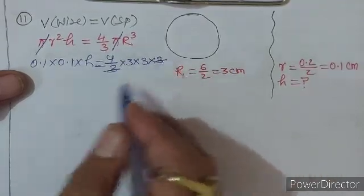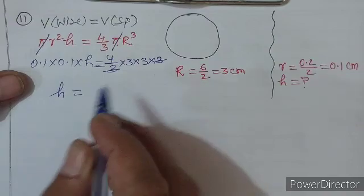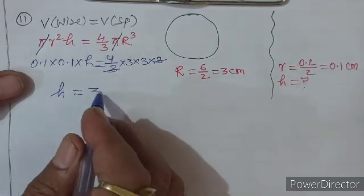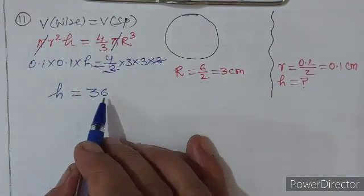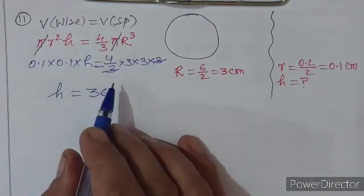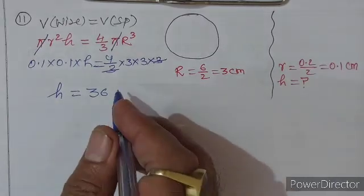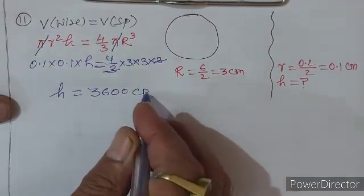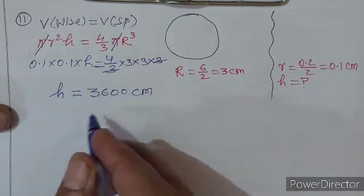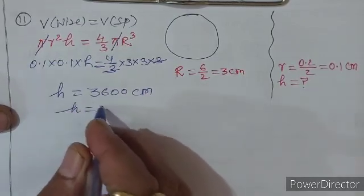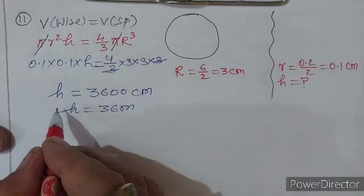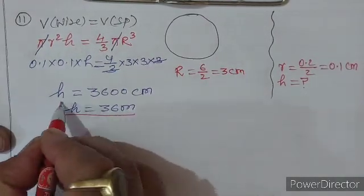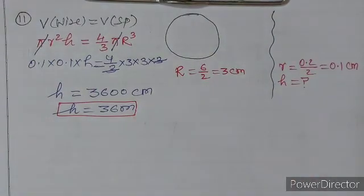3 से 3 cancel हो गया। h = 36 × (1/0.01)। Point हटाने पर opposite side में 0 बढ़ेगा: h = 3600 cm। इसे 100 से divide करें: h = 36 meter। cm से meter में convert कर लिया। यही find out करना था — question number 11 clear।